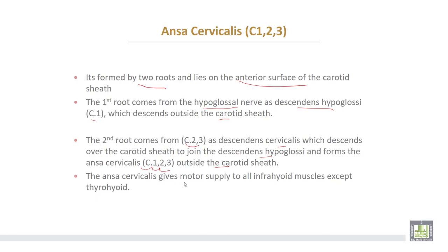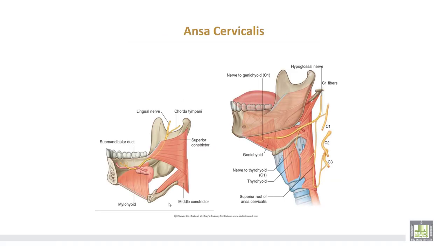The ansa cervicalis gives motor supply to all infrahyoid muscles except the thyrohyoid. In relation to the carotid sheath: in front of it lies the ansa cervicalis; behind it lies the sympathetic chain; and inside it lies the vagus nerve. The diagram shows the ansa cervicalis formed by two roots — the descending hypoglossal and the descending cervicalis — forming a loop called the ansa cervicalis, which supplies all infrahyoid muscles except the thyrohyoid.